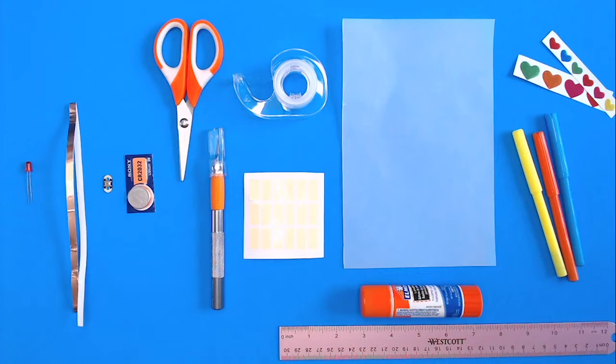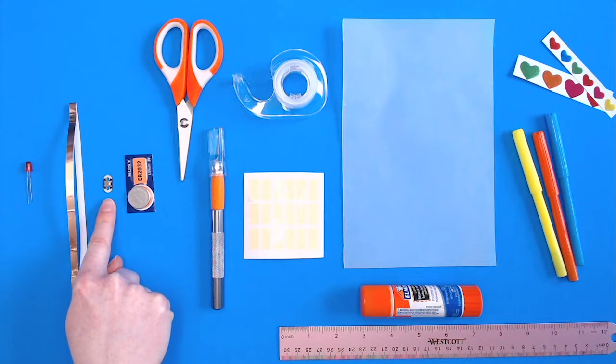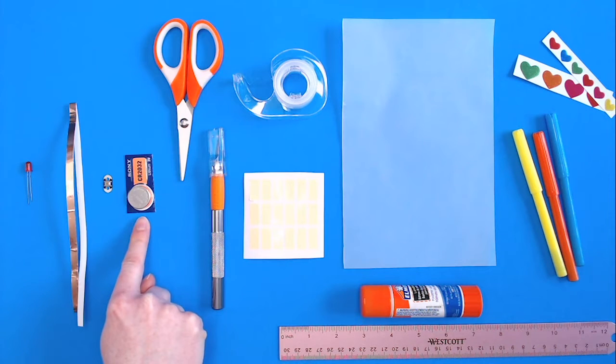Now let's gather the rest of the supplies. To build the circuit, you'll need an LED to light up your card, some copper tape for the wiring (this is about 15 inches), a button to turn the project on. I'm using a lily pad button. You can also skip the button and your project will be on all the time. A battery to power the card. This is a 3-volt coin cell battery. We recommend a CR2032 battery.